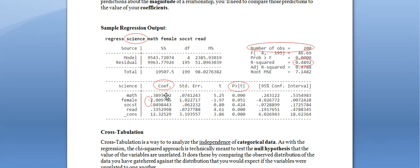The coefficient tells you how many units of increase you expect to see in the value of the dependent variable for each unit increase in the corresponding explanatory variable. For math, the coefficient is 0.389. That means for every unit increase in the math score, you see a 0.389 increase in the science score. So if you go from a 97 to a 98 on the math portion, we predict your science score increases by 0.389 — perhaps from 94 to 94.389.